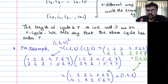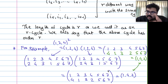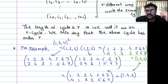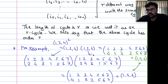So the shortcut: instead of writing cycles as full permutations, we can directly multiply cycle notation. Always start from the leftmost element, trace through each cycle in order. If an element is not in a cycle, it is treated as identity (fixed).